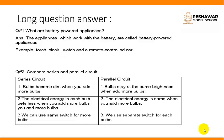Now long question answer. Question number 1: What are battery powered appliances? The appliances which work with the battery are called battery powered appliances. Examples: torch, clock, watch and a remote control car.